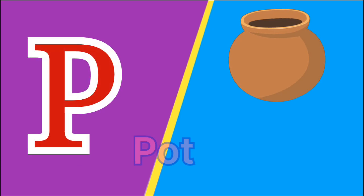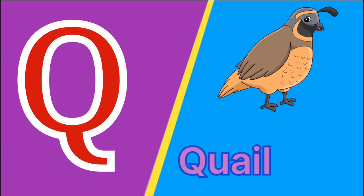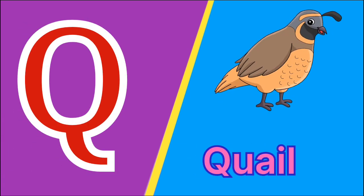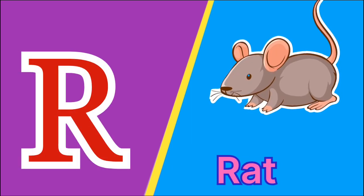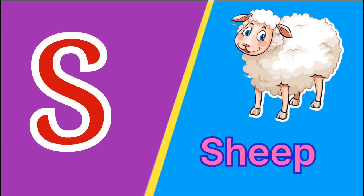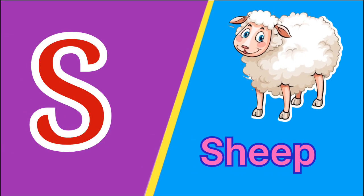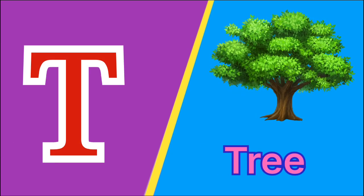P for Pot. Q for Quill. R for Right. S for Ship. T for Tree.